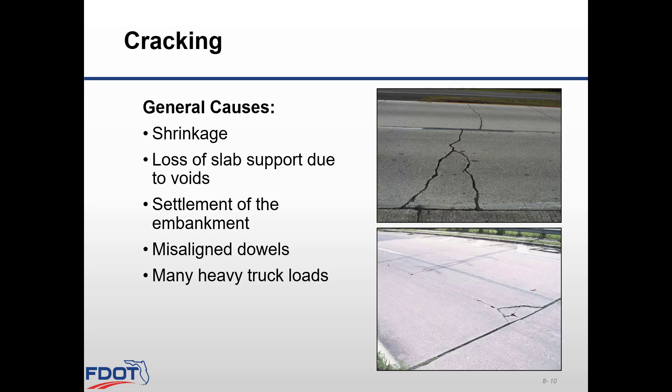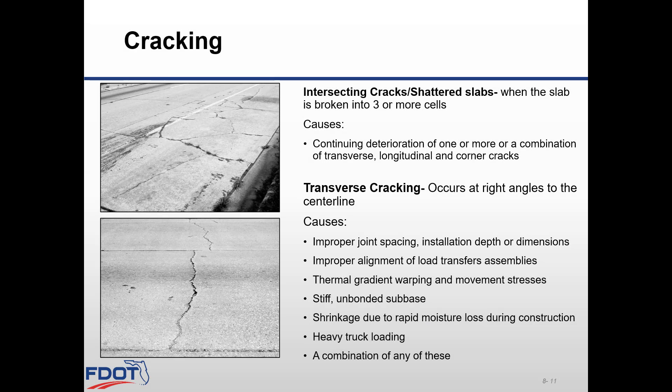Cracking occurs when a concrete slab breaks into two or more pieces. General causes include shrinkage, loss of slab support due to voids, settlement of embankment, or misaligned dowels. The types of cracking include intersecting cracks or shatter slabs, which occur when the slab is broken into three or more cells. Causes are continuing deterioration through one or more, or a combination of, transverse, longitudinal, and corner cracks.